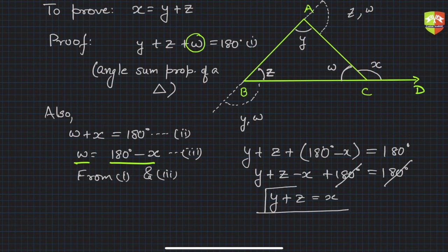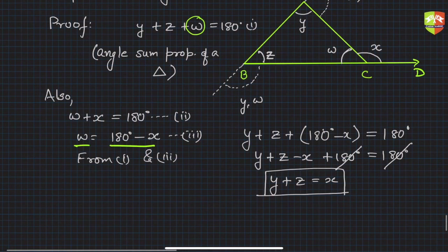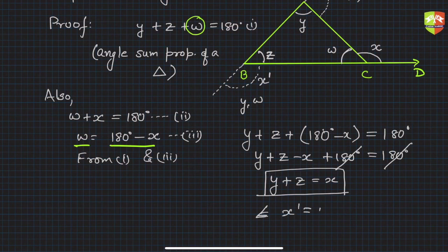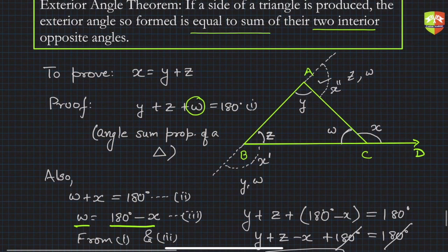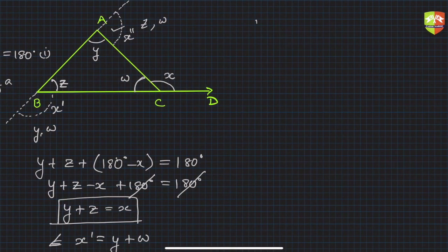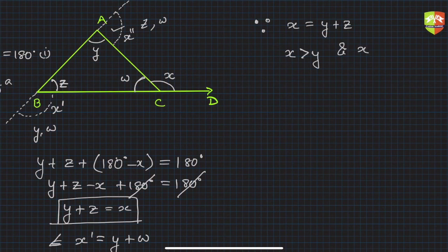Similarly, you can establish this for the other exterior angles. If we call another exterior angle x-dash, then x-dash equals y plus w. And the third exterior angle x-double-dash equals z plus w. All of these hold. Another important aspect: since x equals y plus z, and y and z are both positive, clearly x is greater than y and x is greater than z.